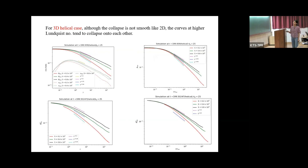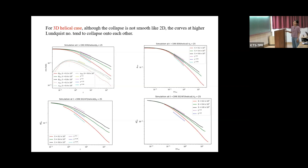For 3D helical MHD decaying turbulence, when we plot B_RMS versus t — the dotted line corresponds to U_RMS and the solid line to B_RMS — it decays with a power law in time. On normalizing the time axis with the reconnection timescale, the B_RMS curves tend to collapse onto each other. Although the collapse is not as smooth as in 2D, the distance between B_RMS curves at successively higher Lundquist numbers decreases quite significantly. Similarly, the B_H_RMS curves on normalizing the time axis with the reconnection timescale also decrease significantly. These results suggest that the reconnection timescale is the dynamical timescale for helical 3D MHD decaying turbulence.